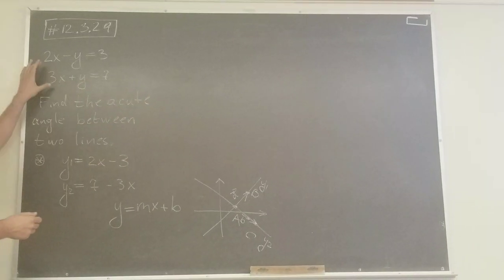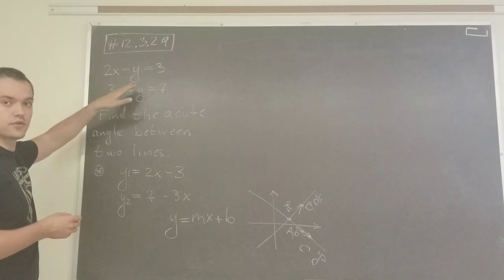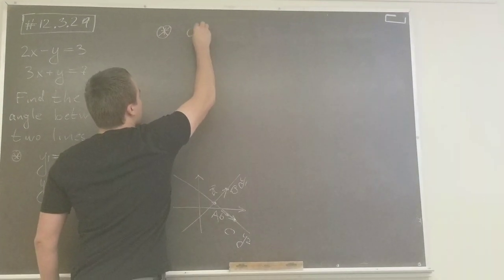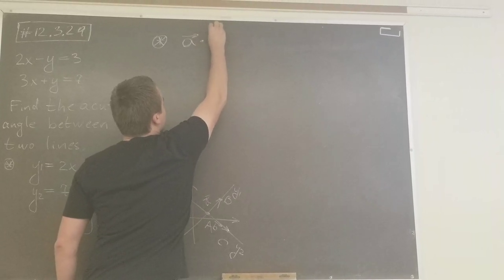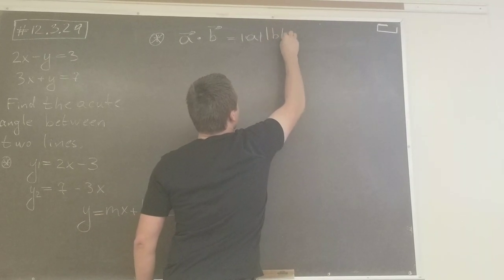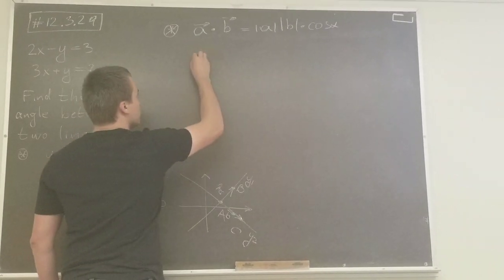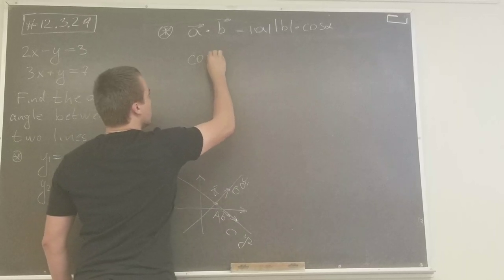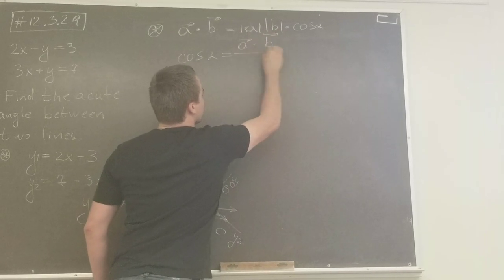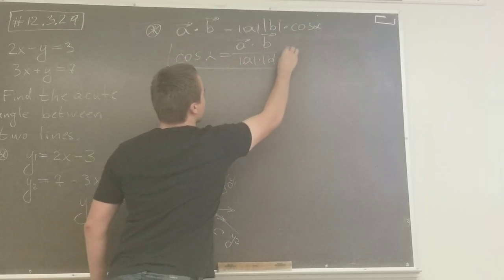Before we start, since this problem is under the dot product section, I'm going to use the dot product formula: vector A dot vector B equals the absolute value of A times the length of B times cosine alpha. So I'll use the formula: cosine alpha equals vector A dot vector B over the length of A times the length of B, to find the angle.